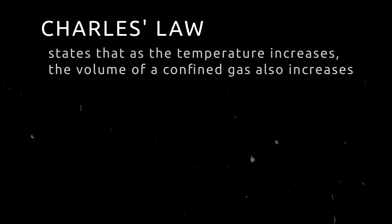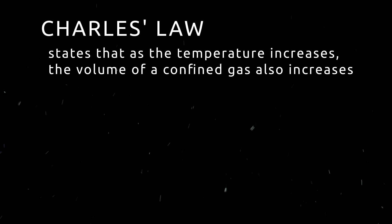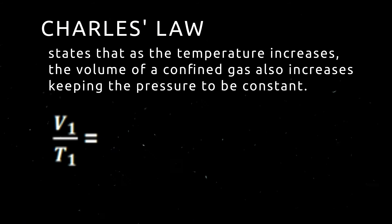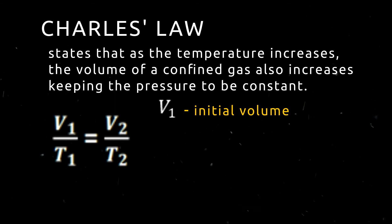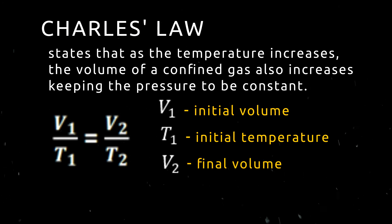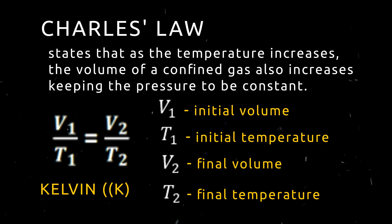Charles' Law states that as the temperature increases, the volume of a gas also increases. Conversely, if the temperature of a gas decreases, the volume of the gas also decreases, keeping the pressure constant. This relationship can be expressed in the equation V1/T1 = V2/T2, where V1 is the initial volume, T1 is the initial temperature, V2 is the final volume, and T2 is the final temperature. By the way, the temperature in gas laws is expressed in Kelvin units.